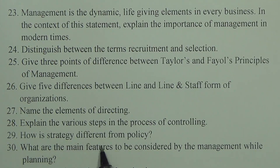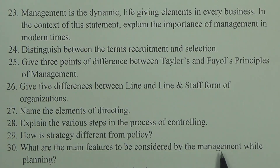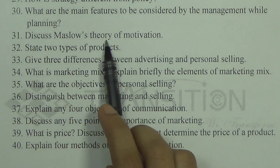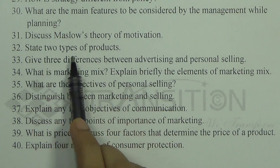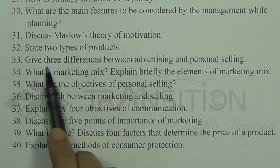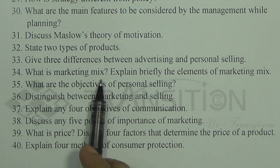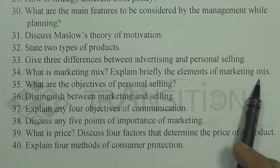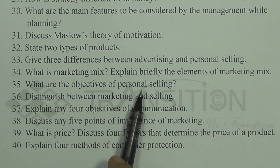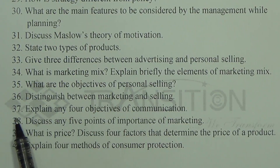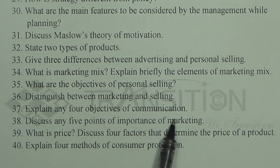Question twenty-nine: How is strategy different from policy? Question thirty: What are the main features to be considered by the management while planning? Question thirty-one: Discuss Maslow's theory of motivation. Question thirty-two: State two types of products. Question thirty-three: Give three differences between advertising and personal selling. Question thirty-four: What is marketing mix? Explain briefly the elements of marketing mix. Question thirty-five: What are the objectives of personal selling? Question thirty-six: Distinguish between marketing and selling. Question thirty-seven: Explain any four objectives of communication. Question thirty-eight: Discuss any five points of importance of marketing.